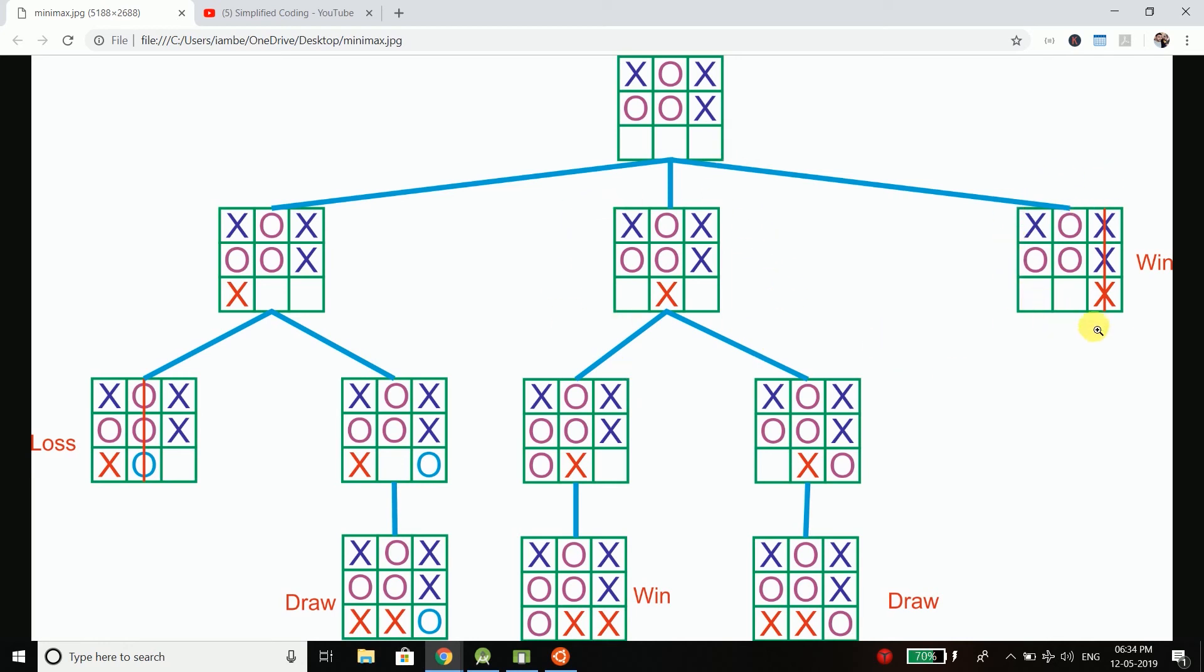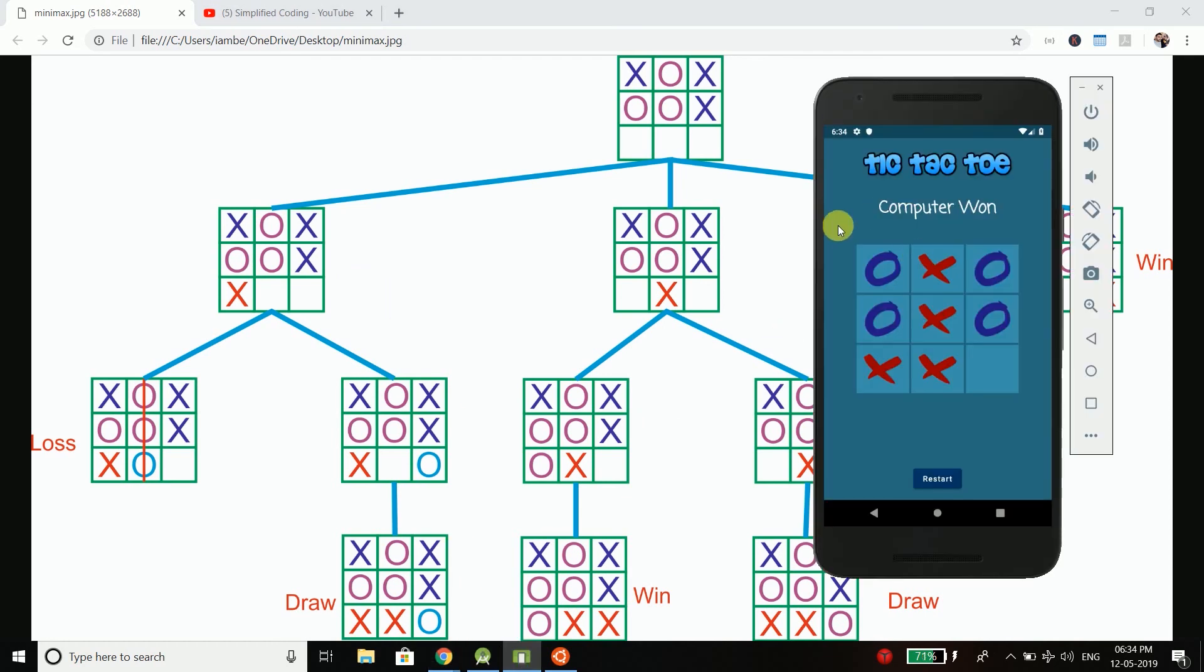Now we have third option here, if we perform the move here it is a certain win. So this is the best move. So we need to select this move and for every state of the board we need to follow the same process. For every move we will generate all the possibilities by calling the function recursively. So this is the thing that we will implement in our application to make our tic-tac-toe unbeatable.